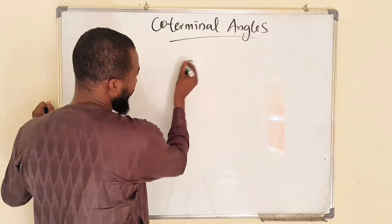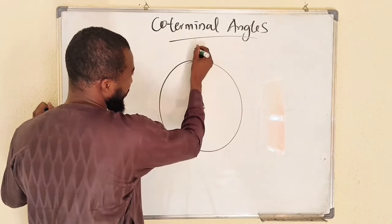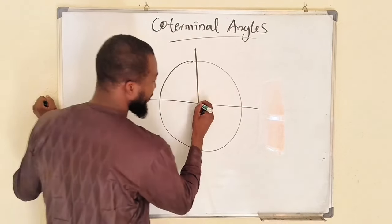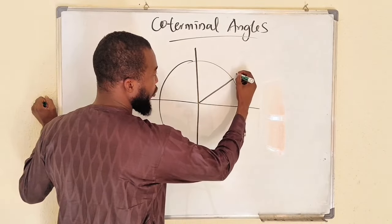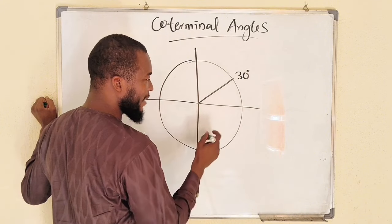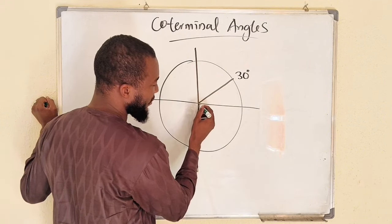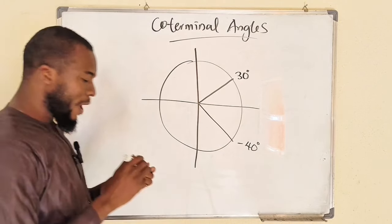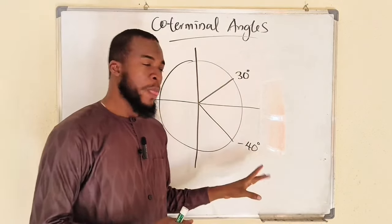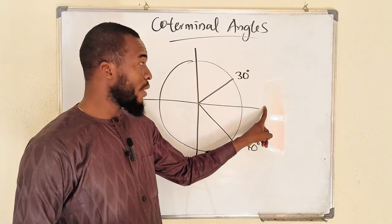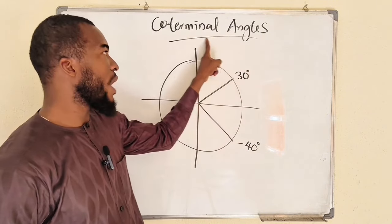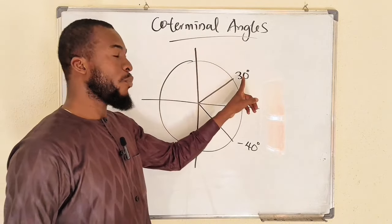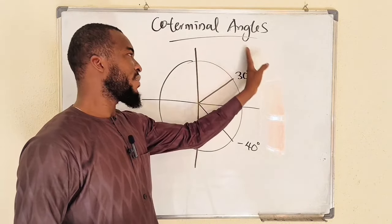For example, if we have a unicycle like this — this is a unicycle. 30 degrees is a positive angle. For instance, if I have negative 40 degrees here, what is the difference? When you are counting or measuring angles counterclockwise, like this, anti-clockwise, all angles measured will be positive.